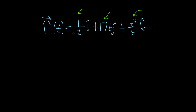As a good first step, it might be a good idea to rewrite this in a nice way so that we can go through the differentiation process. So r of t can be written as t to the negative 1 î. The reason is there's a 1 in the numerator, and so when you bring it upstairs, it makes the exponent negative.